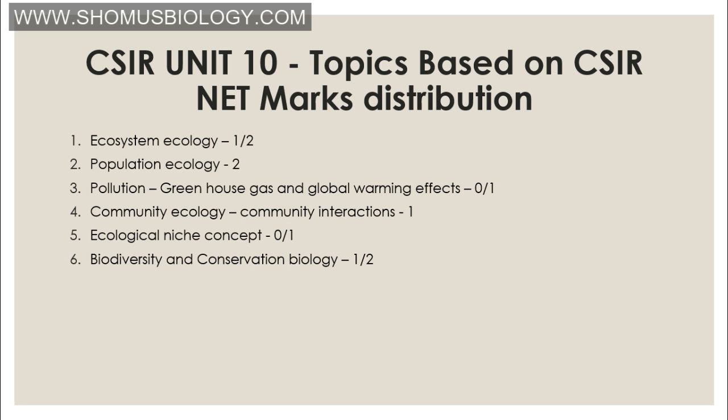For Ecosystem and Population Ecology, know Population Growth, R and K selected species, and the three types of Survivorship Curves (Type 1, 2, and 3). For Pollution, remember Greenhouse Gases and their effects. For Community Ecology, know interactions like Mutualism, Predation, and Competition. For Ecological Niche, understand Fundamental vs. Realized Niche. Biodiversity and Conservation Biology includes Simpson Index, Shannon Index, and Alpha, Beta, and Gamma Diversity.